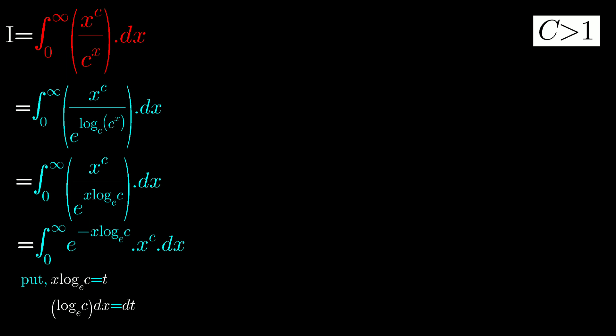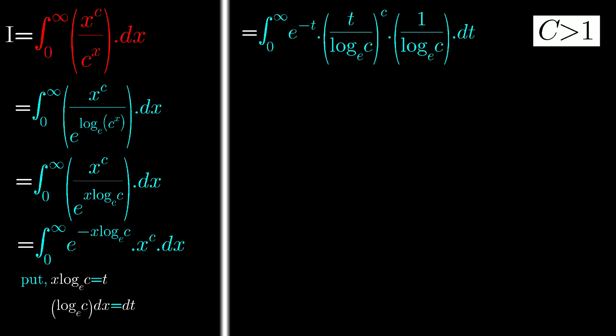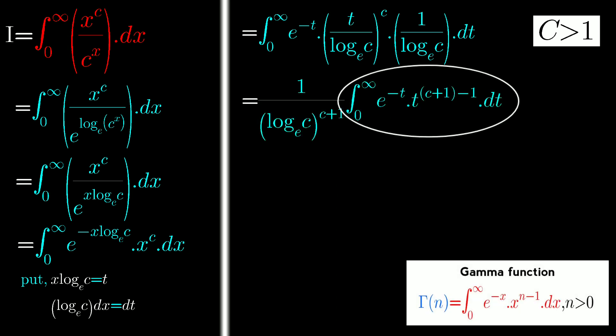Replacing all this, we get the gamma function, so we can write this integral as gamma of n where n equals c plus 1. So the answer is gamma of c plus 1 upon log c to the power c plus 1.